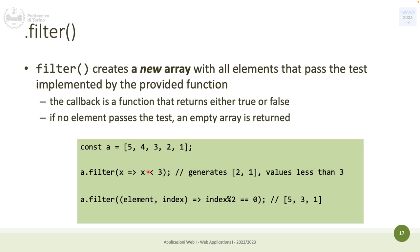Regarding parameter naming: the names like 'element' and 'index' are just names you choose — you can call them 'a', 'b', 'x', 'i'. What matters is the order: the first (mandatory) parameter is the element, the second (optional) is the index, and there is a third optional one which is the full array, as mentioned before.